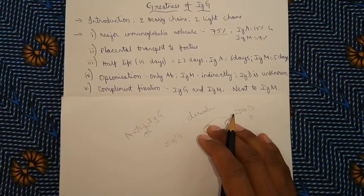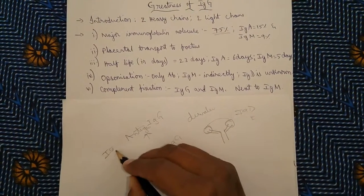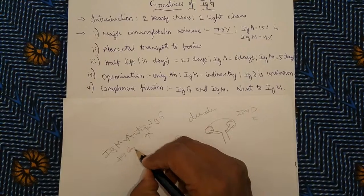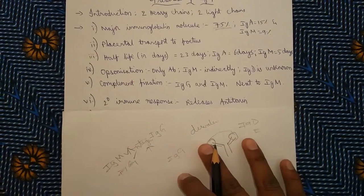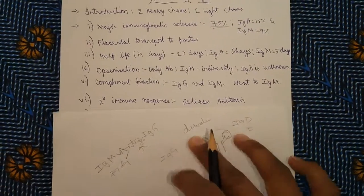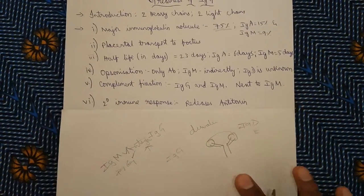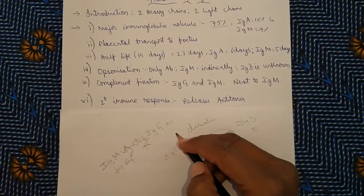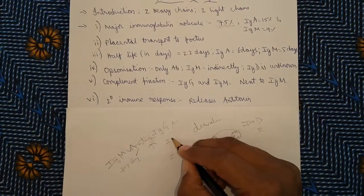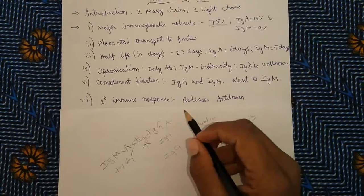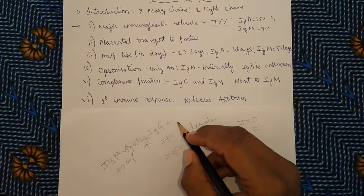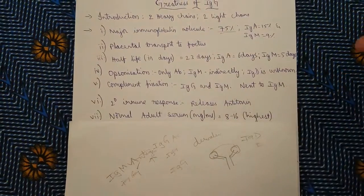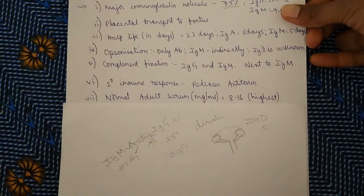In this characteristic, IgM overcomes IgG. The sixth property is secondary immune response. What is secondary immune response? The ability to fight against the antigen for the second time or third time and fourth time. So IgG has the potential to release the antitoxins against the antigen like bacteria or virus. Only two antibodies are having this secondary immune response capability. Among them, IgG has the highest capability.